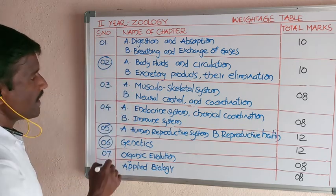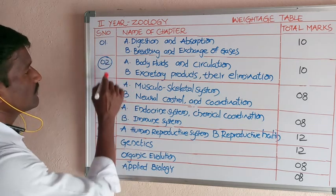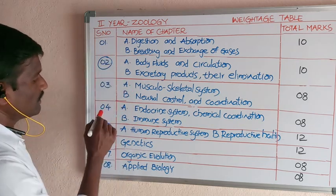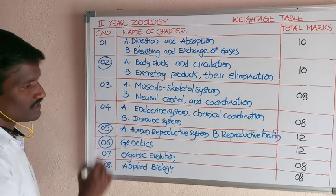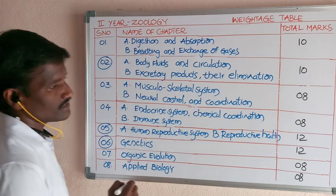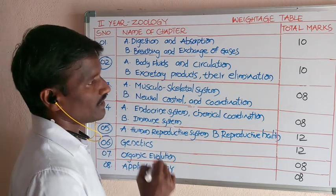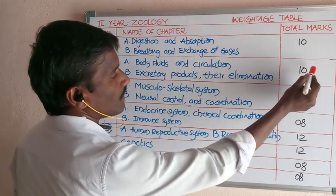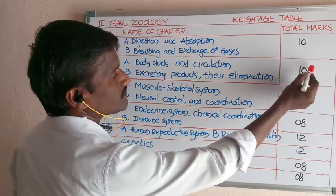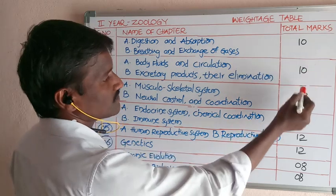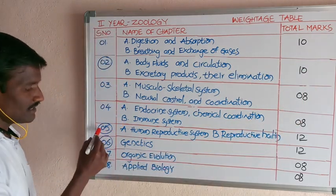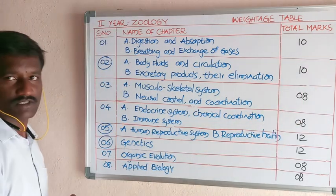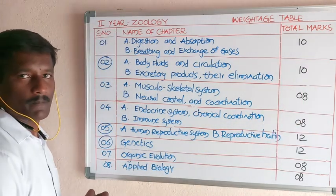Out of the total 8 chapters, chapters 2, 5, and 6 are very important because long answer type questions come from these three chapters, and the mark weightage is also more from these chapters.